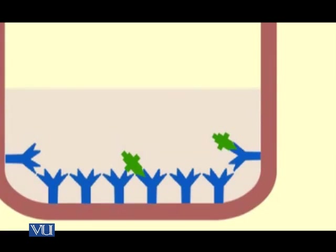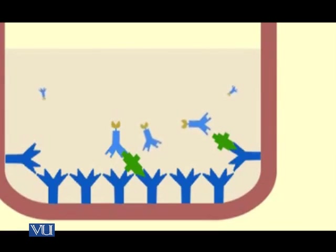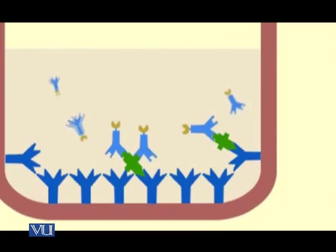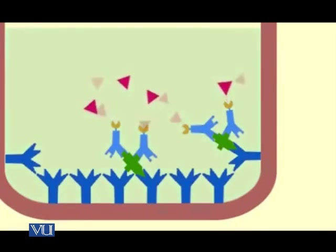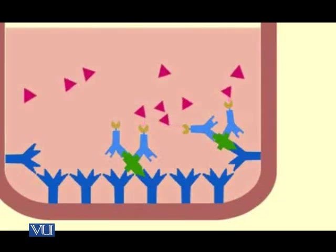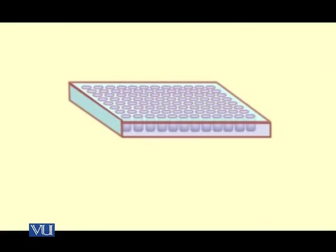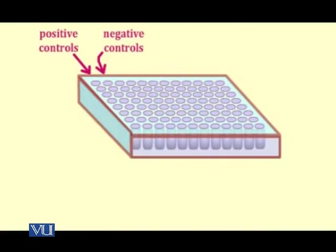A second antibody, directed against another epitope on the target antigen, is added. These antibodies are conjugated covalently to an enzyme, indicated by the yellow circle at the FC portion of the second antibody. They bind to the antigen fixed in the well, providing a second level of specificity. The wells are washed again to remove unbound antibodies. In the final step, a solution of a colorogenic enzyme substrate is added, and the interaction of the substrate with the captured enzyme generates a visible color in the solution, indicating those samples where the second antibody bound to the target antigen.